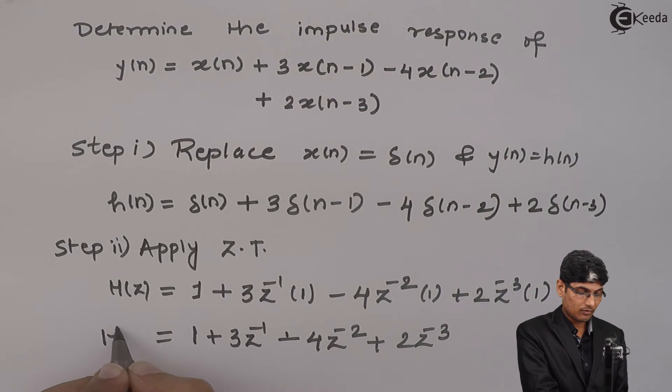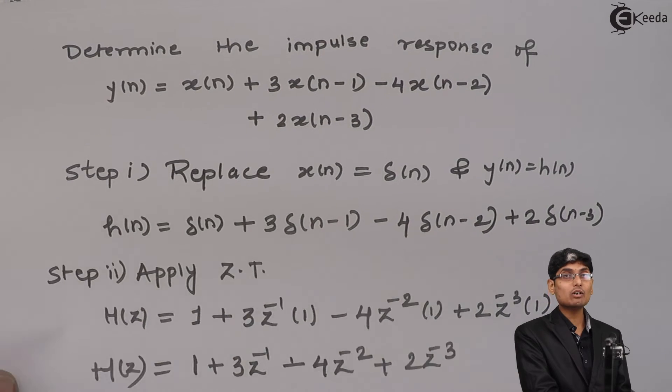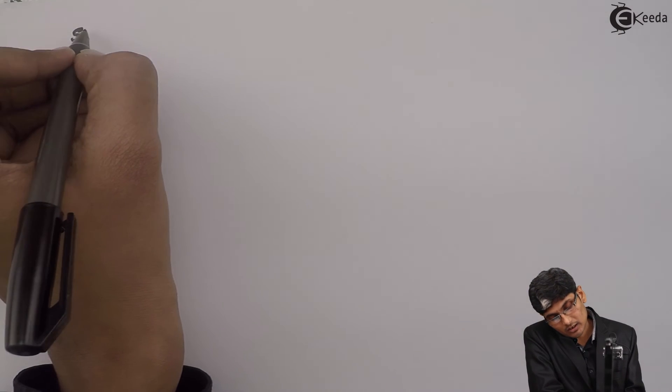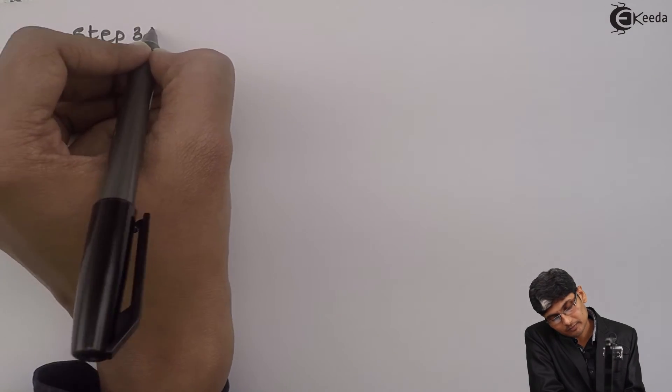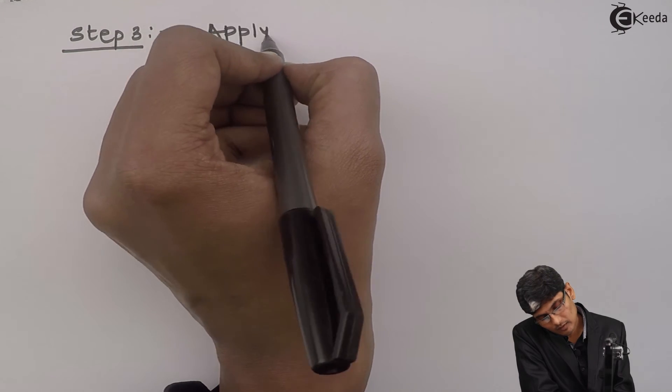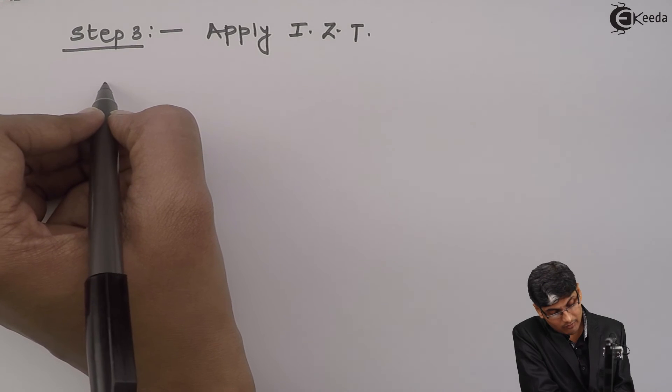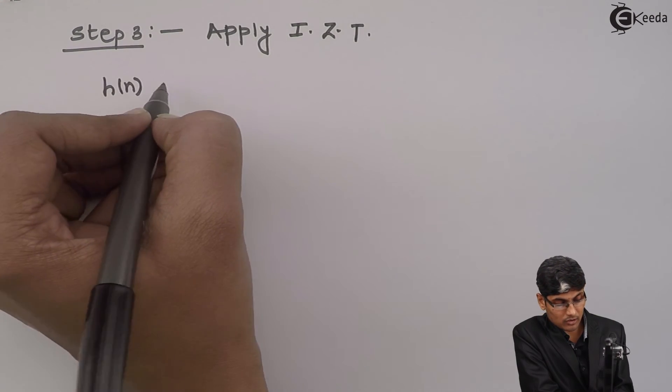Whenever I get such type of h of z which has only numerator and no denominator, that time the problem becomes more simpler. We don't have to apply a partial fraction expansion. Here, step 3 is apply inverse z transform and wherever you have h of z, you have to write h of n.